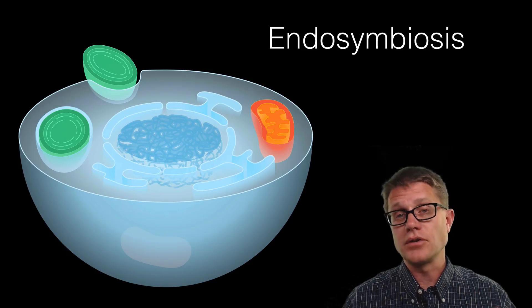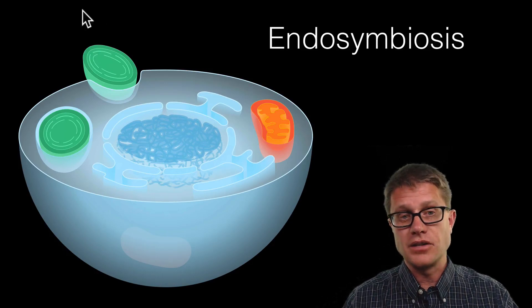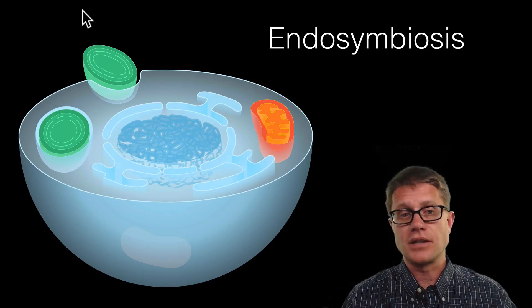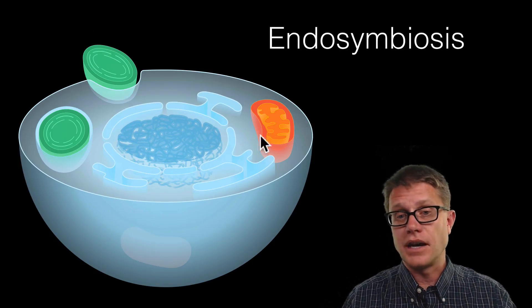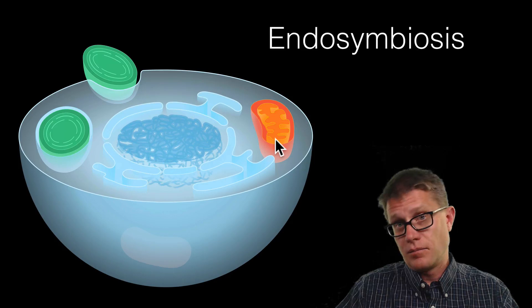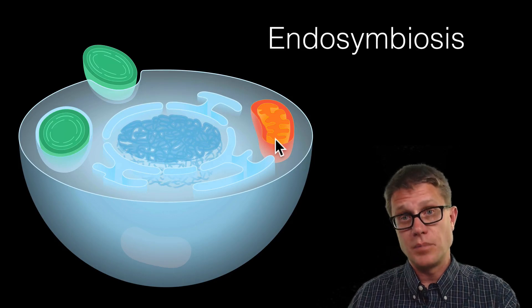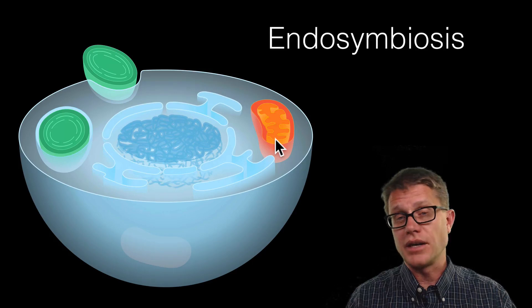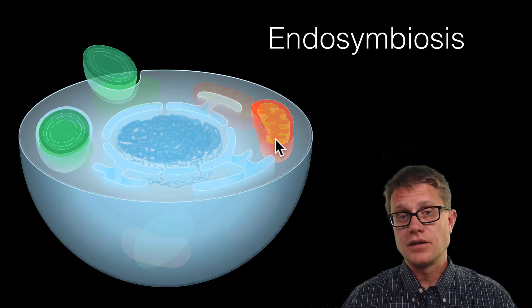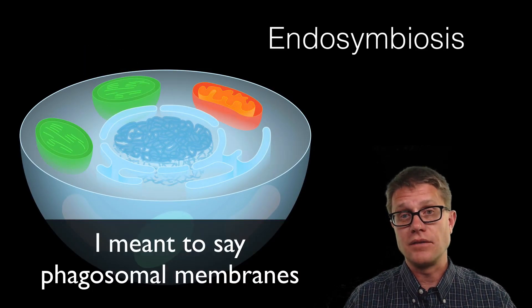We think at one time endosymbiosis occurred. We had these cyanobacteria or ancestors of cyanobacteria that were taken into a cell. Now already inside there we had a mitochondria. And previous to that the mitochondria had been taken into the cell as well. But as we engulf it, instead of breaking down the cyanobacteria, the cell got rid of those phagocytes around the outside of it and it became the chloroplast that we have today.